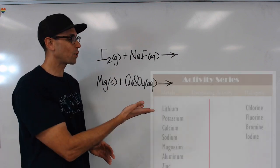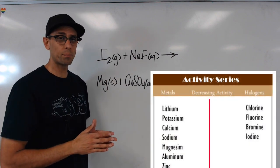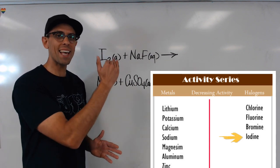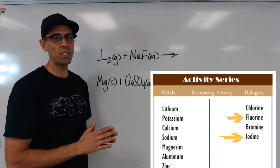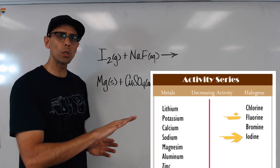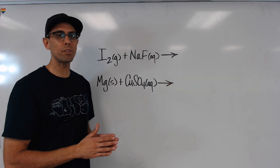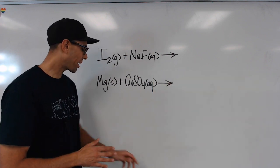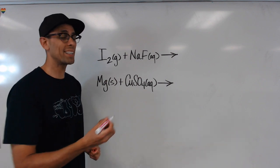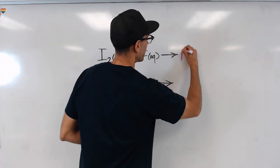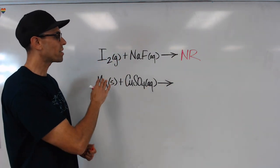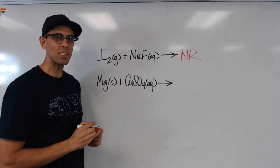So I take a look at my activity series. I notice that iodine is actually lower on the activity series for halogens than fluorine is. Lower down means less active. Upon seeing this, I know that if I carry out this reaction, I'm not going to see any results. There is no reaction that's going to take place because iodine is less active than fluorine.